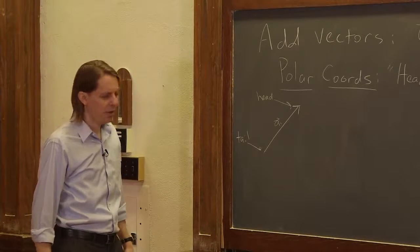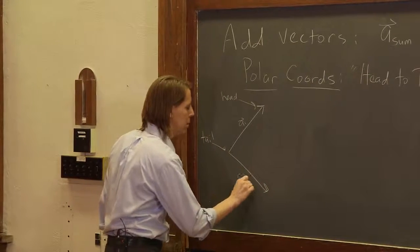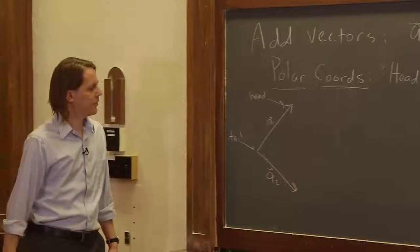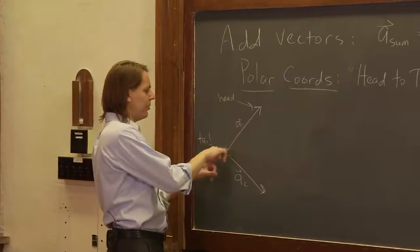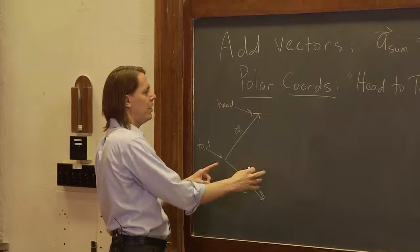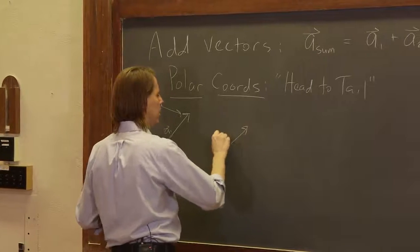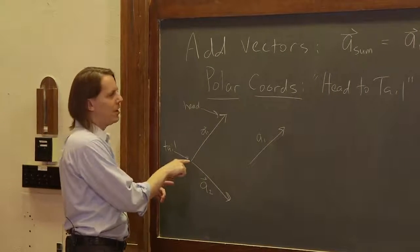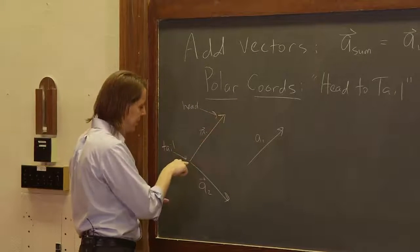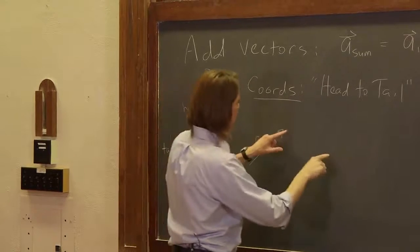So say we have a1 like that, and say we have a2 like that, and we want to add them. So head to tail means both of their tails are here and their heads are here. Pretty much what it means is you draw a1 the same, and you move a2 to where we have head to tail. This one's head is at this one's tail. So then you move this one like there.